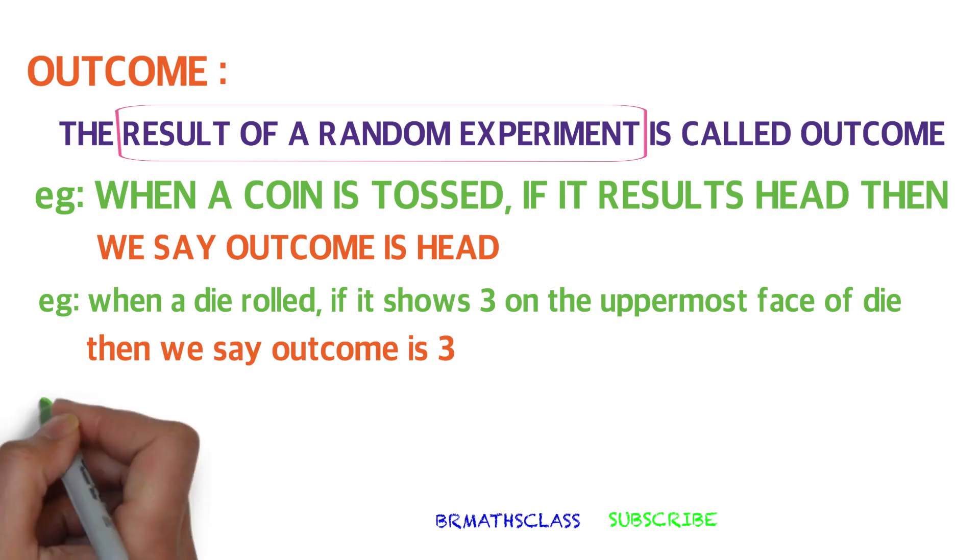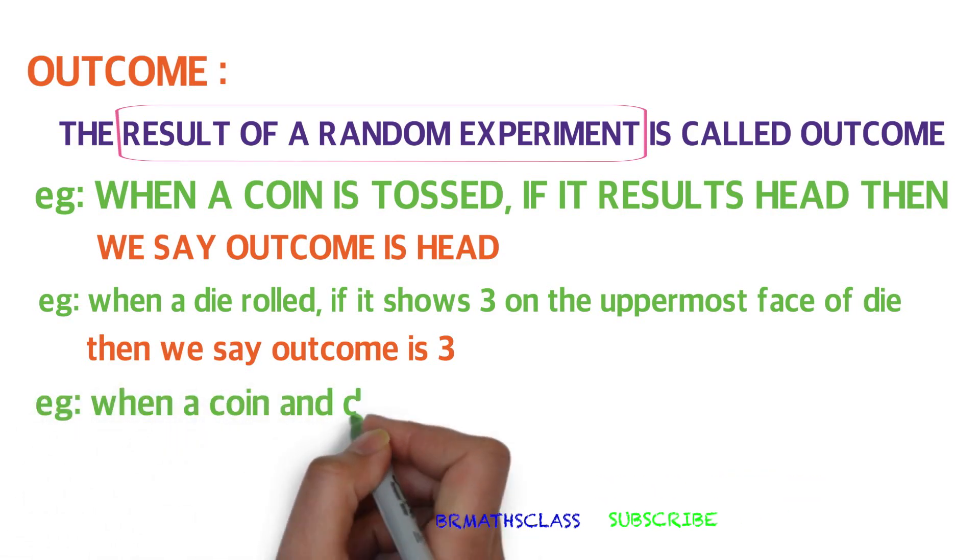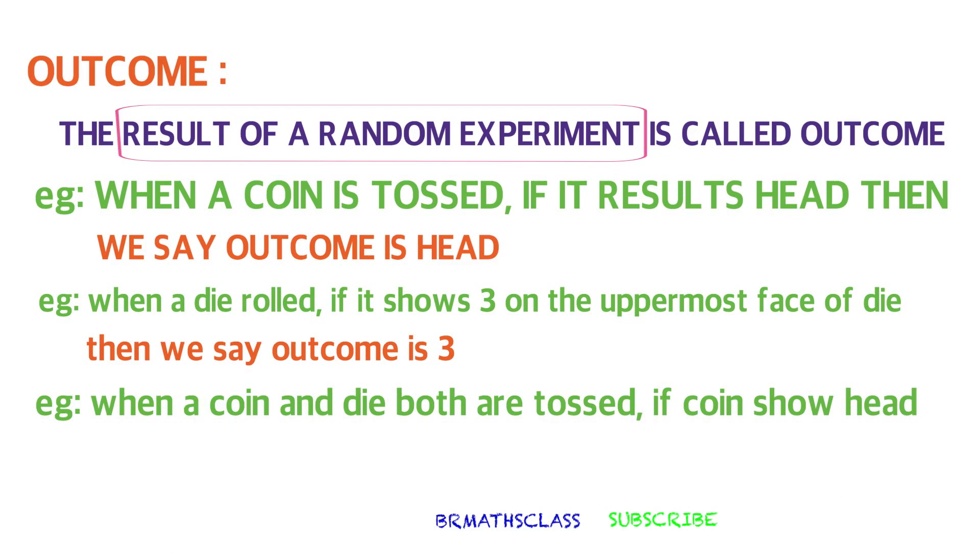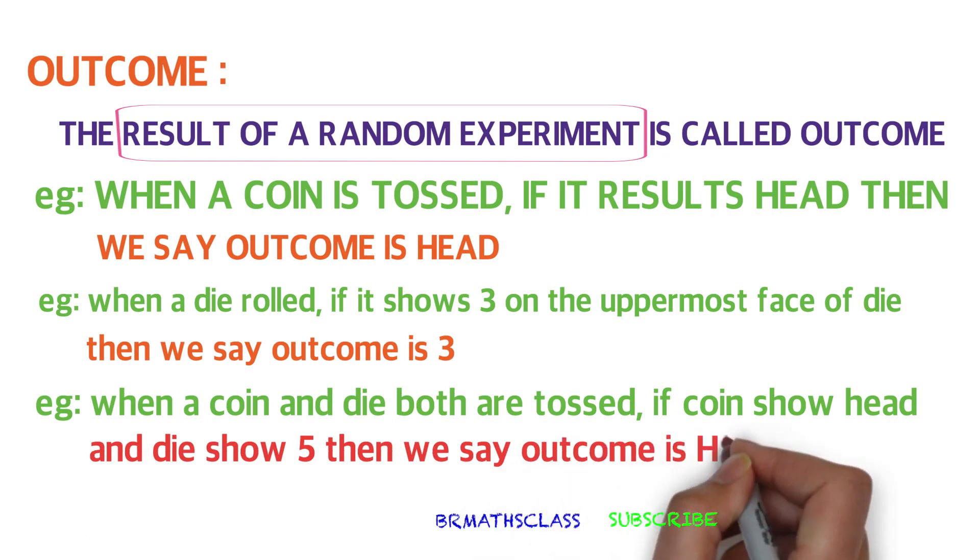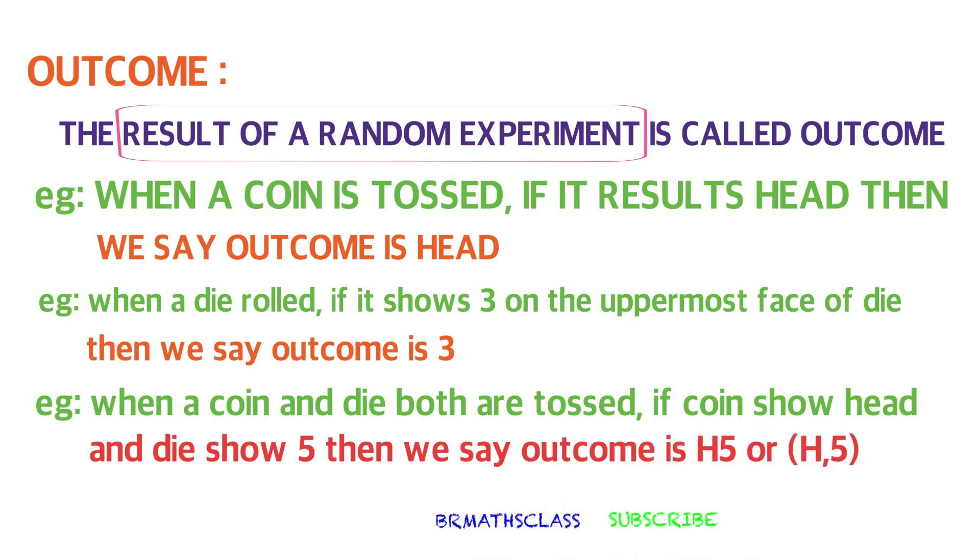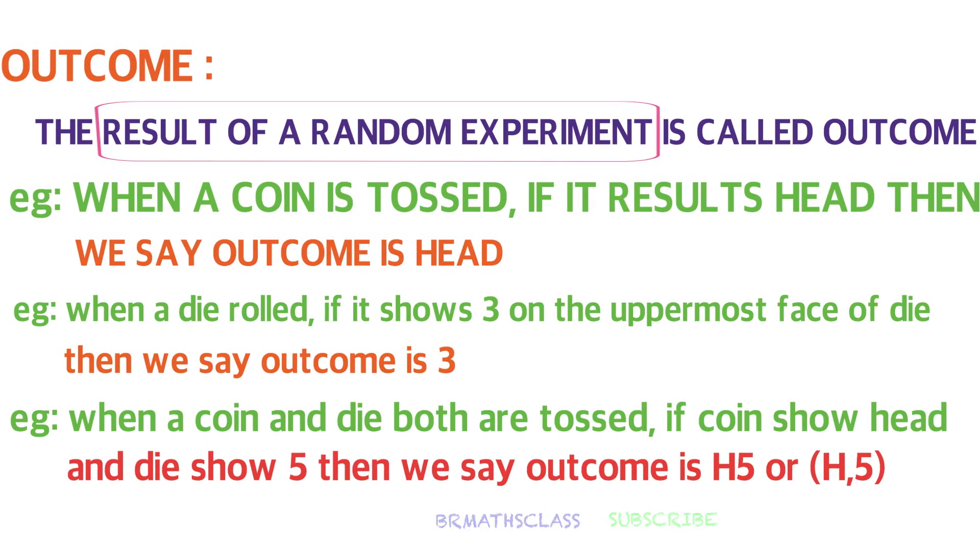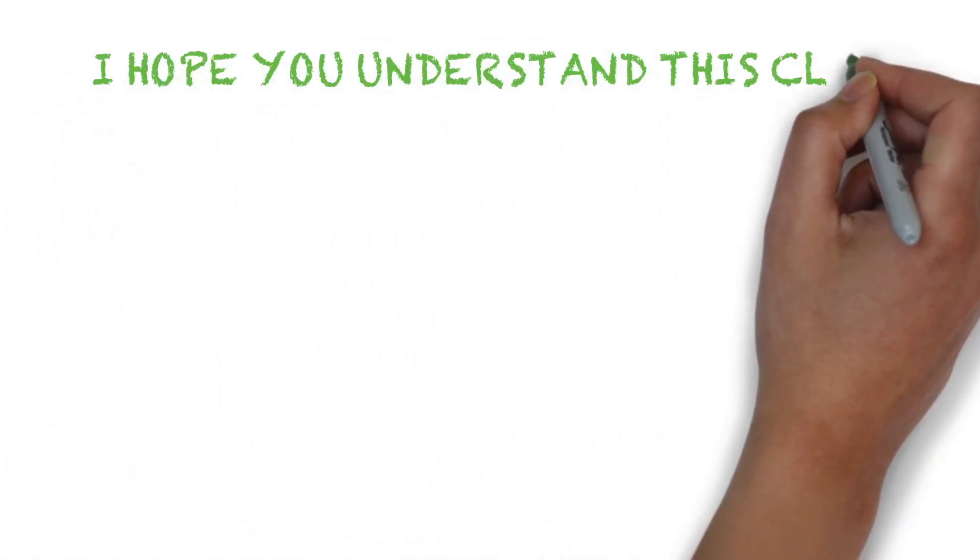Now we'll try to understand this with one more example. When a coin and die both are tossed, if a coin shows head and die shows 5, then we say outcome is head 5 or head comma 5. I hope you understand this class.